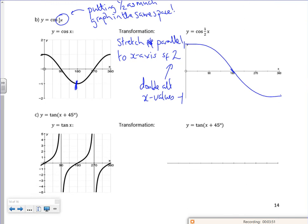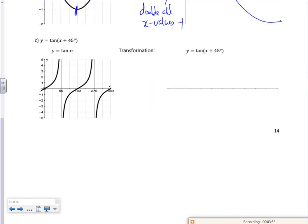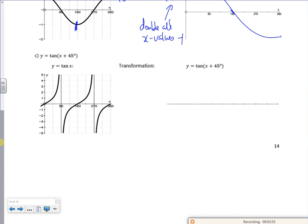The tan graph. So this one here, look, it's inside the brackets. You think it's going to the right, but it's actually going to the left. So it goes left 45 degrees.